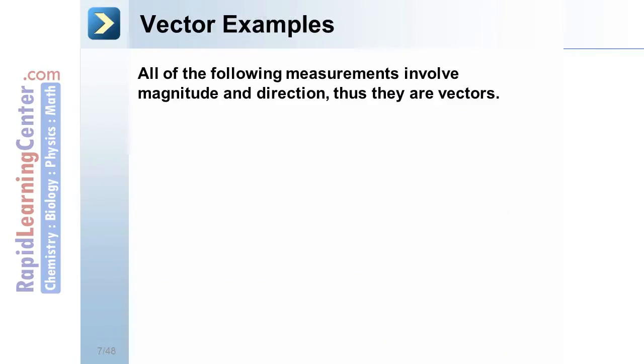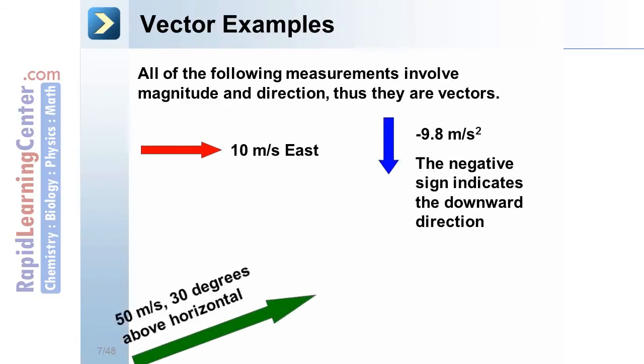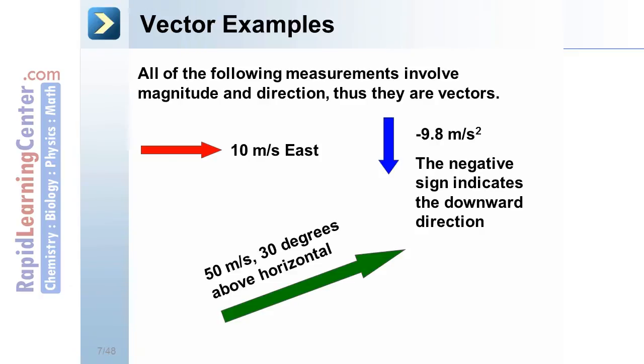Vector examples. All of the following measurements involve magnitude and direction. Thus, they're vectors. Note the directions in each: East, down as the negative sign shows, or 30 degrees above the horizontal.